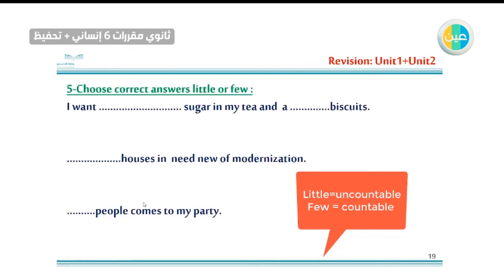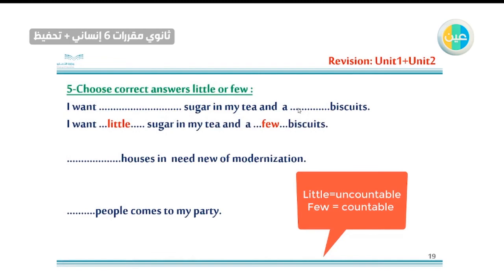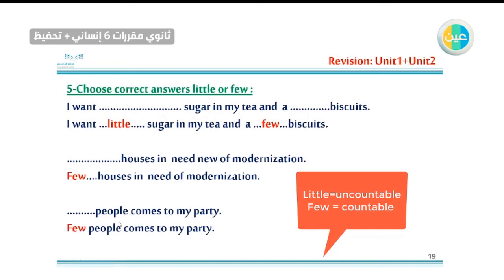'I want little sugar in my tea and a few biscuits.' Sugar is uncountable → little. Biscuits are countable (one biscuit, two biscuits) → a few. 'A few houses are in need of modernization.' Houses are countable — use 'few.' 'Few people came to my party.' People are countable — few people came to my party.